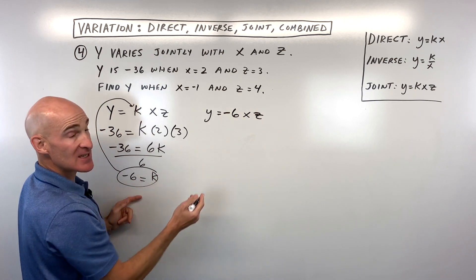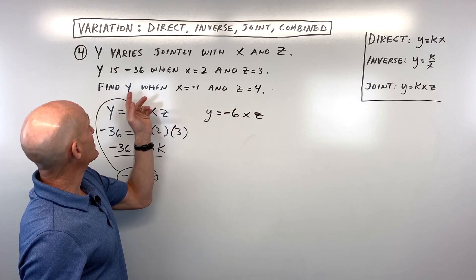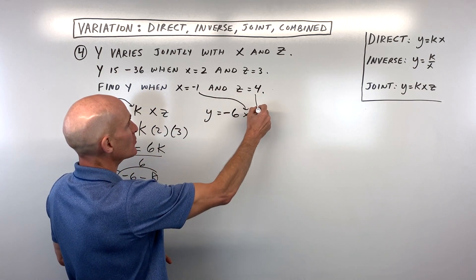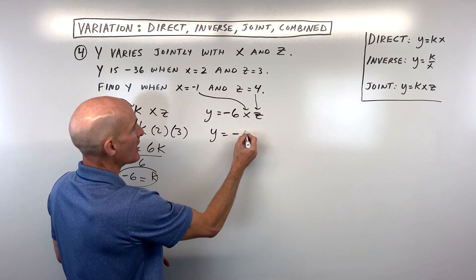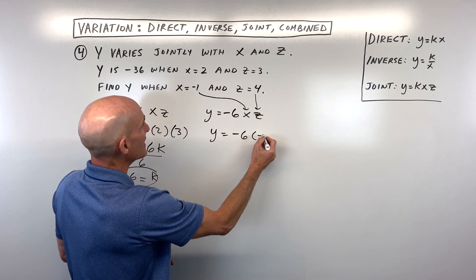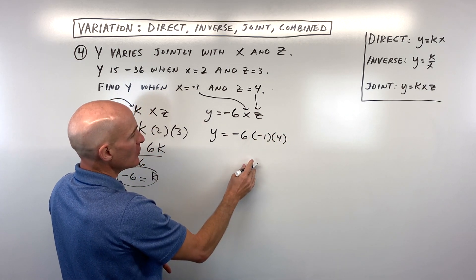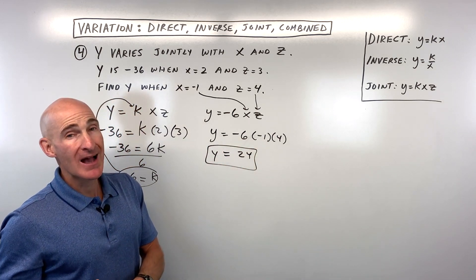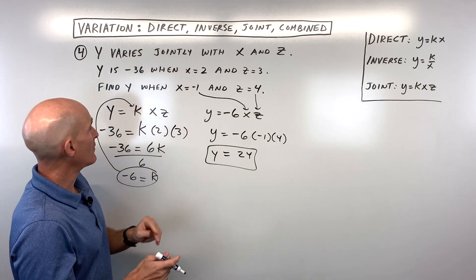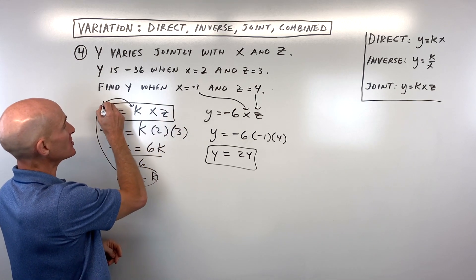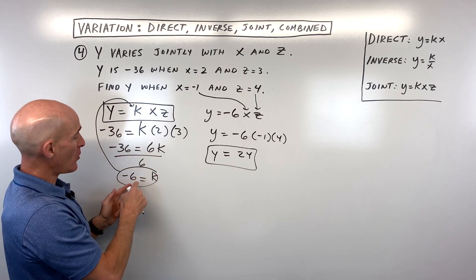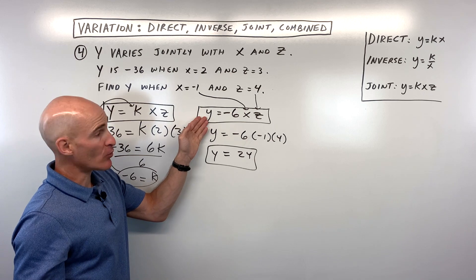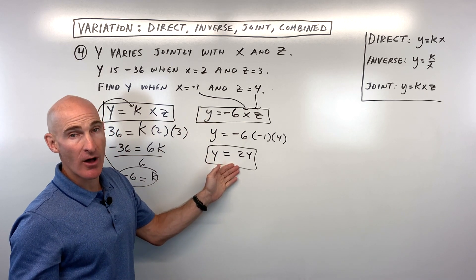I put a line through my z so I don't confuse it with the number 2. Now substituting x equals negative 1 and z equals 4: y equals negative 6 times negative 1 times 4, which gives us 24. Following the same three-step process — general equation, substitute given values to solve for k and get the specific equation, then use that specific equation to solve — works for joint variation as well.